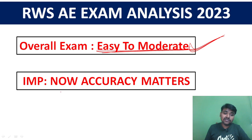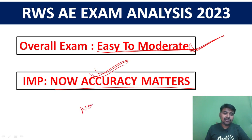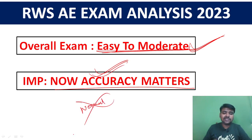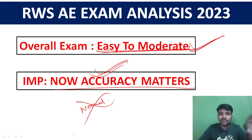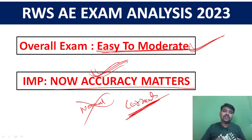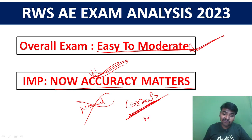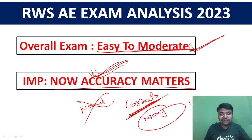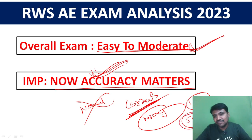Now very importantly, your accuracy matters. If you aim for around 100 marks, your accuracy in answering questions is critical. Accuracy always matters.